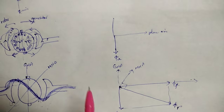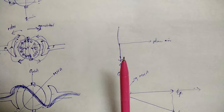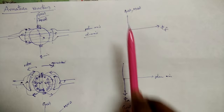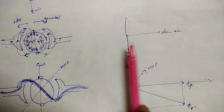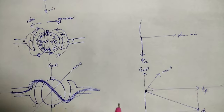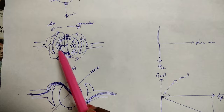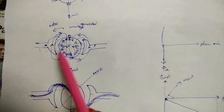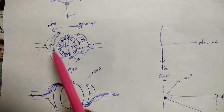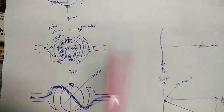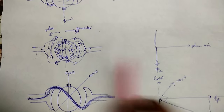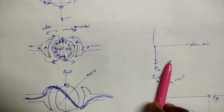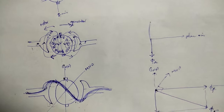Due to armature reaction, there is a shift in the Magnetic Neutral Axis from its original position. The amount of shift depends on the magnitude of the current flowing through the armature conductors — if more current is flowing, the MNA will shift more; if less current is flowing, the MNA shift is less.